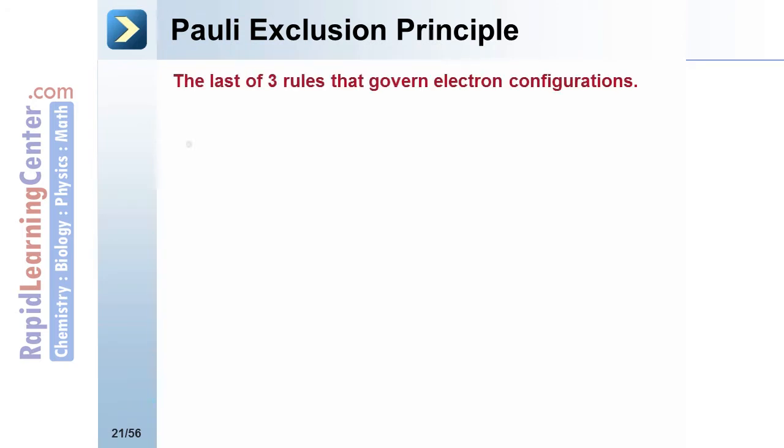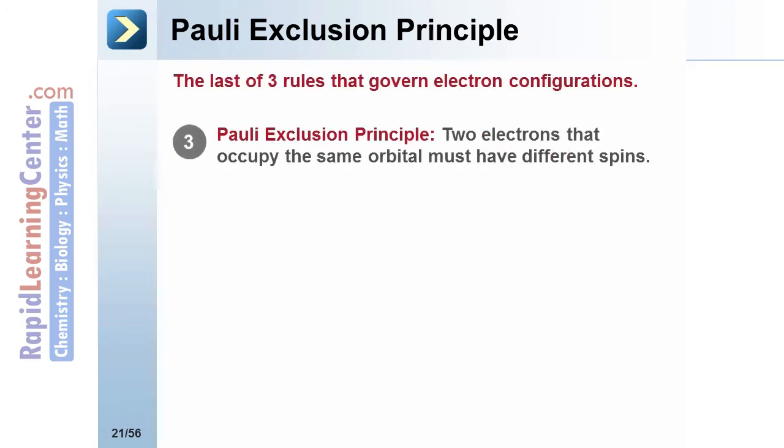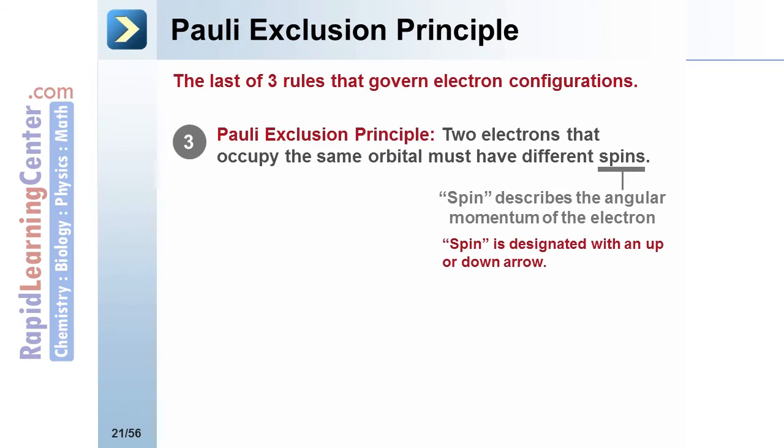The last of the three rules is the Pauli exclusion principle. It states two electrons in the same orbital must have different spins. Spin is the word we use to describe the angular momentum of the electron. Spin is designated with the direction of the arrow, either up or down.